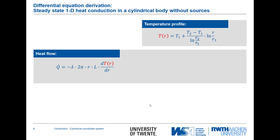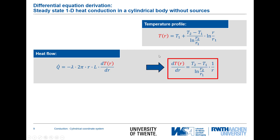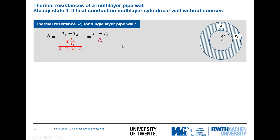Often it is also necessary to calculate the heat flux. Using Fourier's law, Q = −A · dT/dr, we take the first derivative of the temperature profile. The derivative eliminates the ln(r/r1) term, leaving dT/dr = (T2 − T1) / ln(r2/r1) · (1/r). This shows that Q equals a potential divided by a resistance, where the resistance term is ln(r2/r1) / (2πLλ).